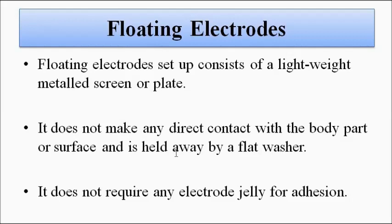The next electrode used for ECG measurement is the floating electrode. Floating electrodes are basically lightweight metal screens or plates placed at specific locations around the chest to record the ECG signal. An important characteristic of floating electrodes is that they do not make any direct contact with the skin, because a flat washer is placed between the electrode and the skin. Because of this feature, the problem of motion artifacts is reduced to a great extent.